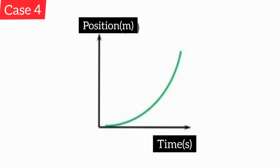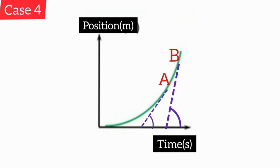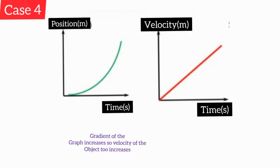Now let's continue with non-straight line graphs. When you consider this curve, the gradient of the curve increases. When we have a curved graph, we select a few points, draw tangents at those points, and extend them to the x-axis. We consider the acute angles made by each tangent. You can see the acute angle increases from point A to point B. As the acute angle increases, the gradient also increases. So the velocity of the object increases over time. Therefore, we can say the motion starts from rest and moves with constant acceleration.